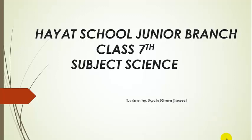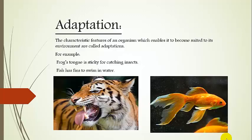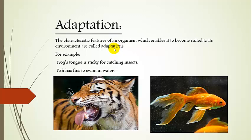Assalamu alaikum to all my dear students. Today I will teach you about adaptation. This topic is taken from your book unit number five: Living Organisms and Their Environment. What is adaptation? The characteristic features of an organism which enable it to become suited to its environment are called adaptations. Animals and plants are adapted to live in a particular natural habitat — they have to adapt themselves to suit their environment.